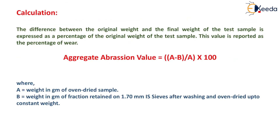Calculation of abrasion test: the difference between the original weight and the final weight of the test sample is expressed as a percentage of the original weight. This value is reported as the percentage of wear. Aggregate abrasion value = (A − B) / A × 100, where A is the weight in grams of the oven-dried sample, and B is the weight in grams of the fraction retained on the 1.70 mm IS sieve after washing and oven drying to constant weight.